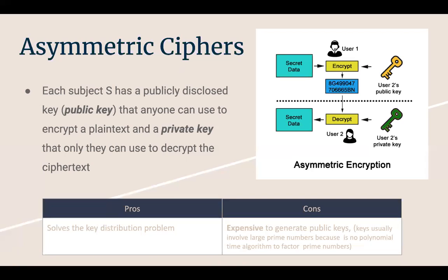Using a private key to encrypt a message means the recipient can use my public key to decrypt it and know the message came from me, since I'm the only one with that private key. The pros are that asymmetric encryption solves the key distribution problem. The cons are it's extremely expensive to generate public keys and encrypt messages because of the complicated math involved — generating keys usually involves very large prime numbers, since there's no polynomial-time algorithm for prime factorization, making brute force very hard.